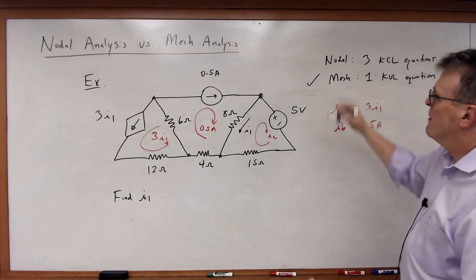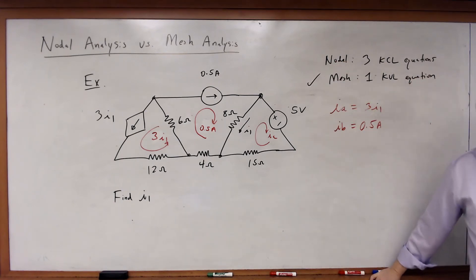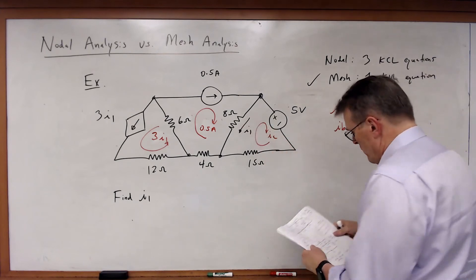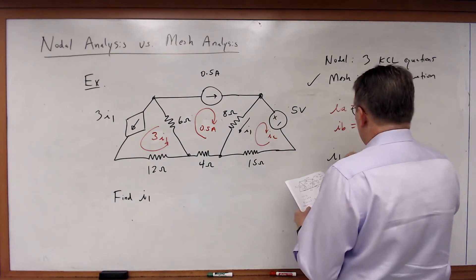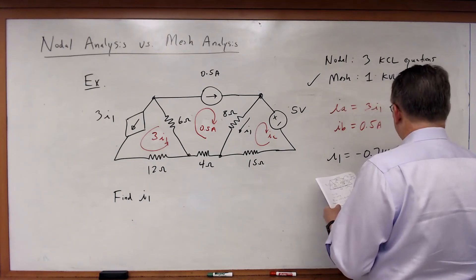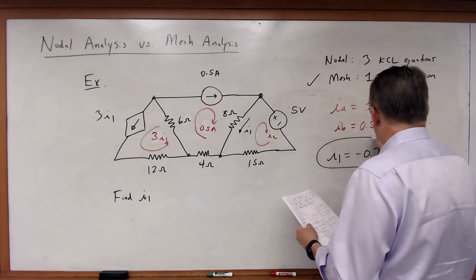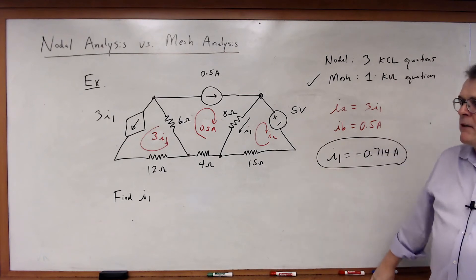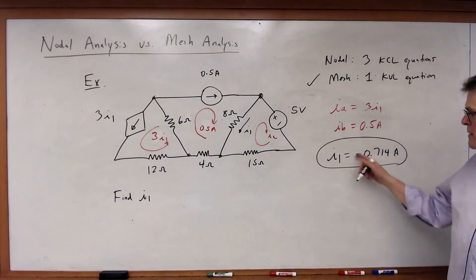And so therefore, mesh is the way to do it. And if you go through and solve this, what you should get is that I1 is equal to minus 0.714 amps. And again, I'll let you go ahead and work the problem and write this as a practice, but that's the answer you should get for I1.